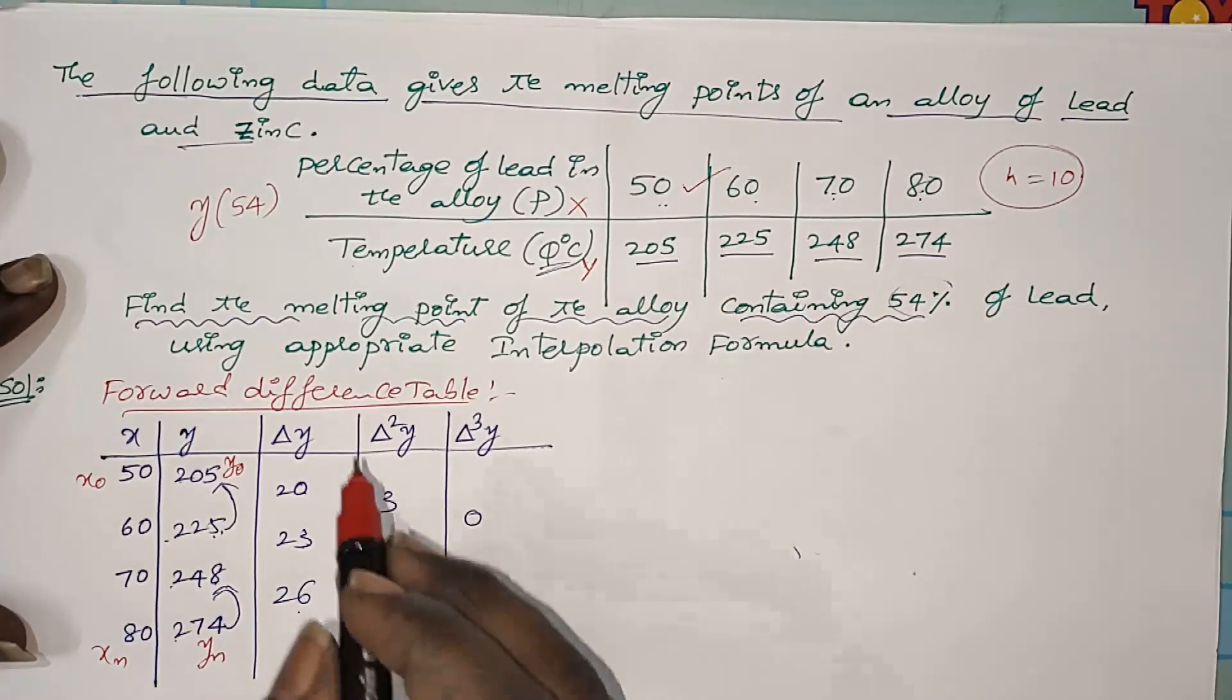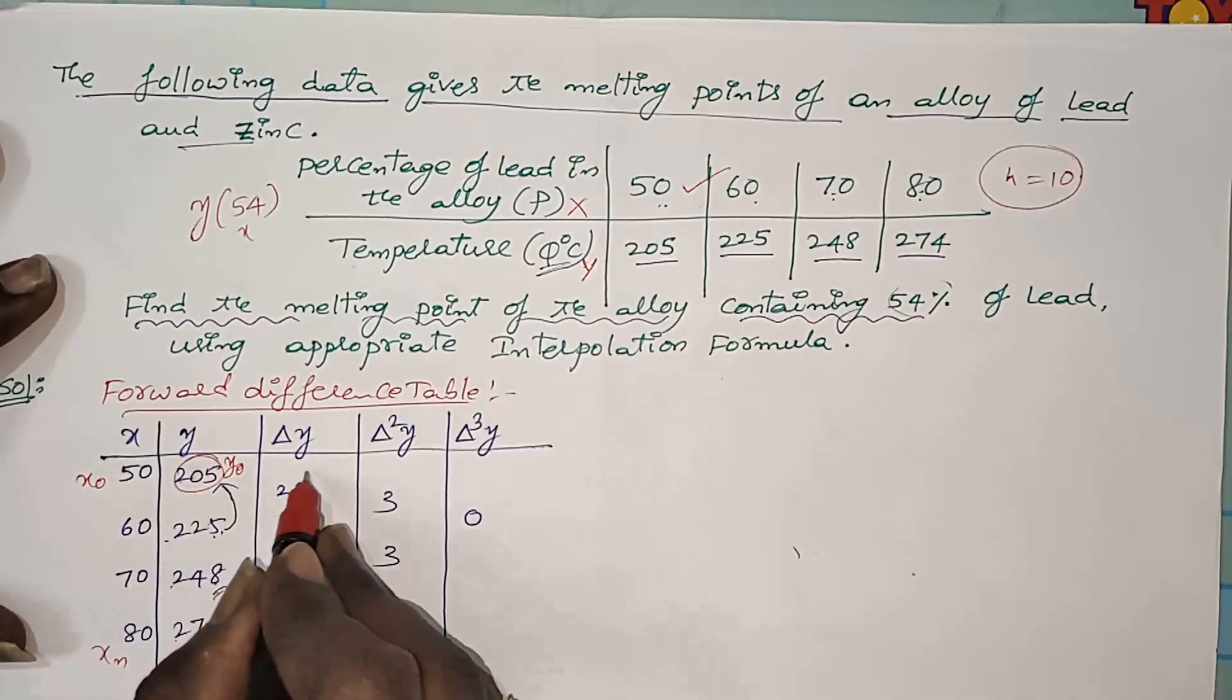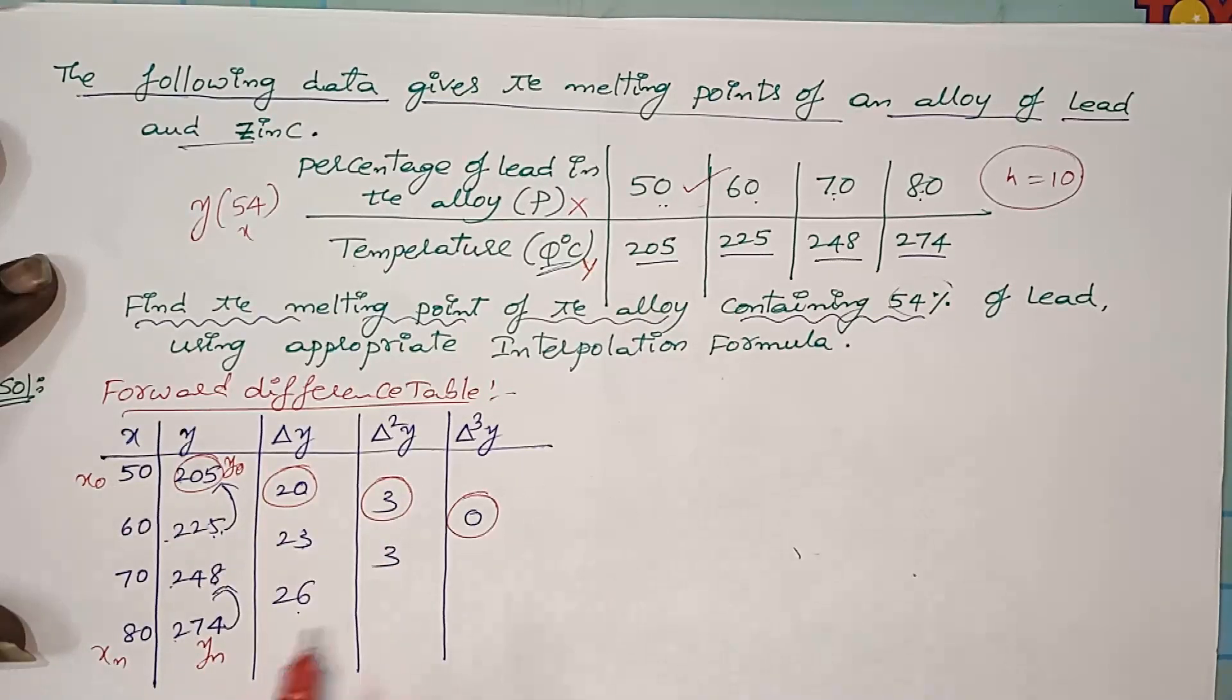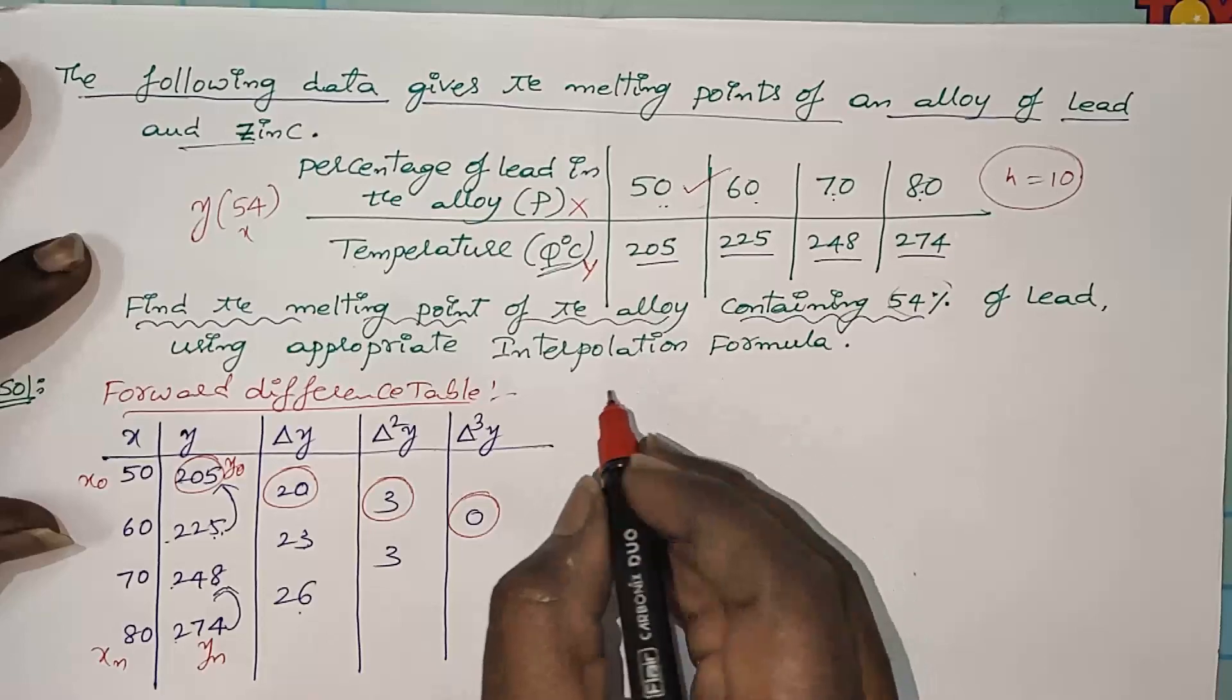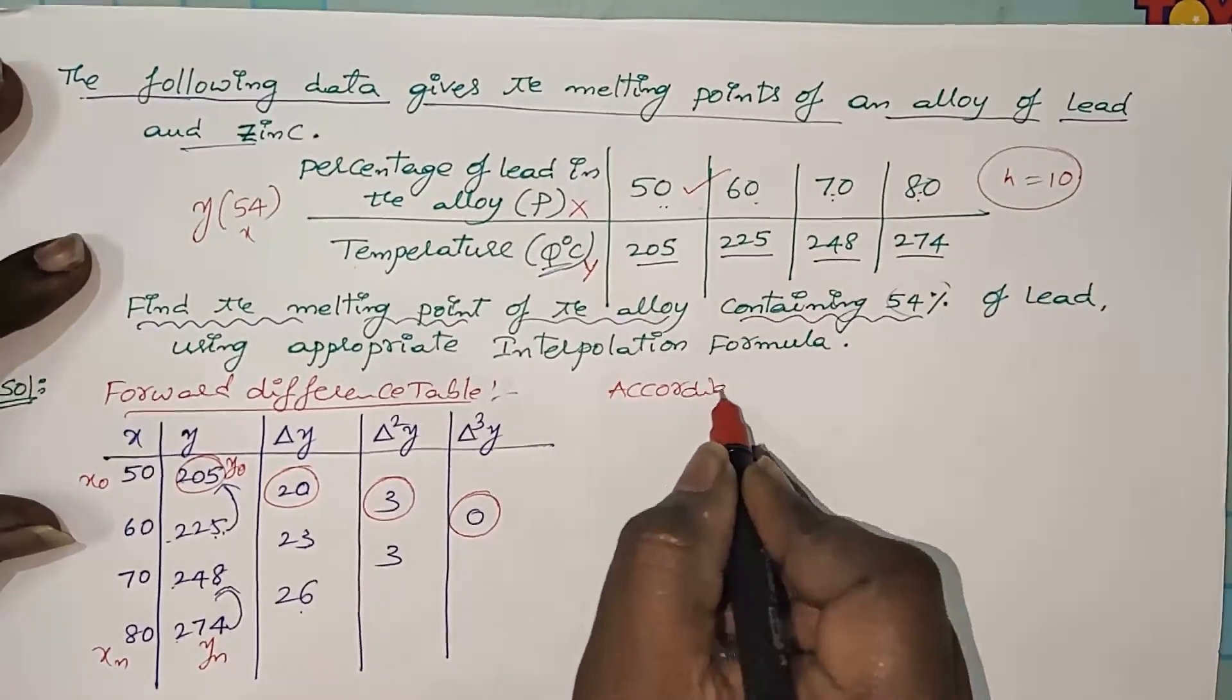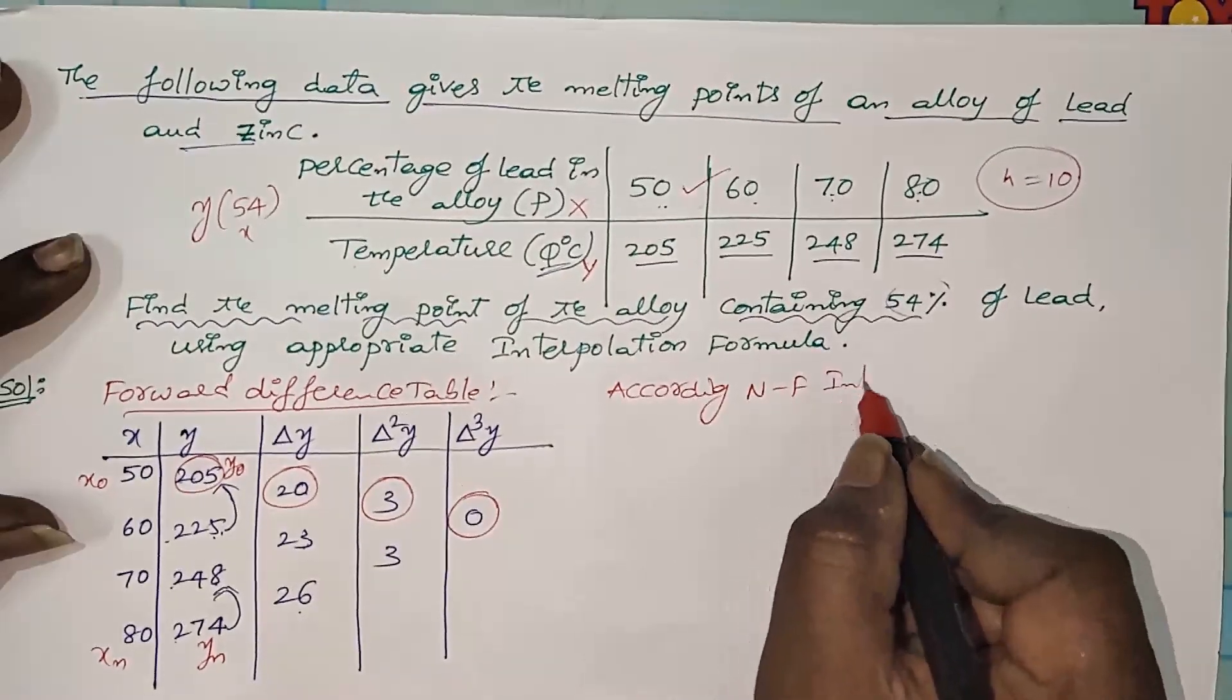Because X = 54 lies at the starting of the data, round up the first corner values in the difference table. We are going to use these values in the formula. According to Newton's forward interpolation formula: